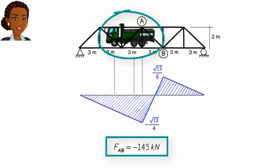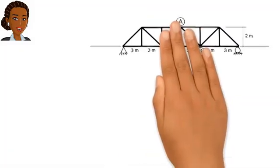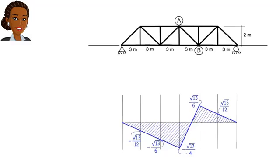Now, let's turn our attention to calculating the maximum tensile force in AB. For this, we focus on the right side of the influence line, where the values are all positive, indicating the presence of a tensile force in the member.